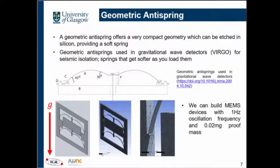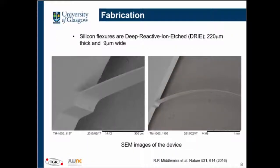At Glasgow, we have been able to make devices with very low resonance frequencies — down to one hertz, which has not been demonstrated anywhere else — with a proof mass of just 0.020 micrograms. Fabrication is very standard; we use our DRIE etching facilities at the James Watt Nanofabrication Centre. SEM images show our flexors, which are around 9 micrometers wide. We keep tweaking the flexor width to reach the target resonance frequency, though it took a long time to optimize these processes.